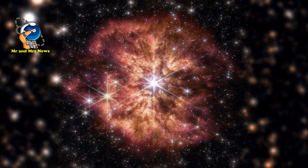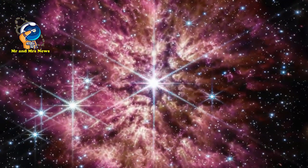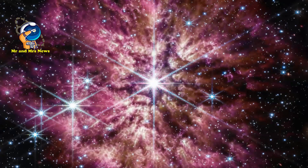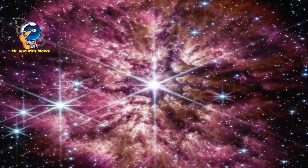Teleskop James Webb menunjukkan bintang tersebut Wolf-Rayet 124 dengan detail yang belum pernah ada sebelumnya dengan instrumen inframerahnya yang kuat. Bintang itu berjarak 15.000 tahun cahaya di konstelasi Sagittarius.